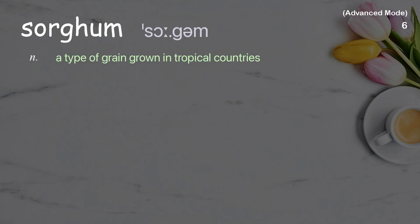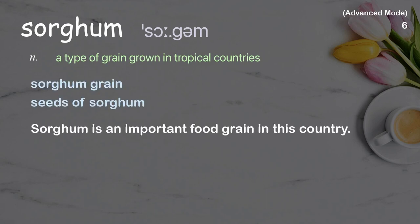Sorghum: a type of grain grown in tropical countries. Examples: sorghum grain, seeds of sorghum. Sorghum is an important food grain in this country.